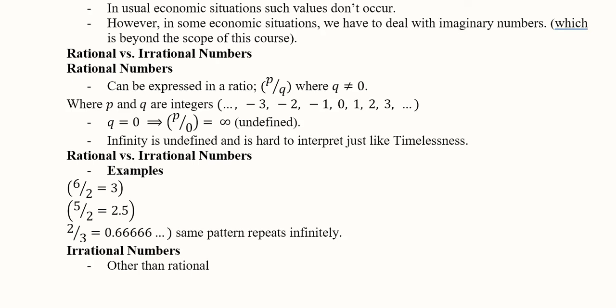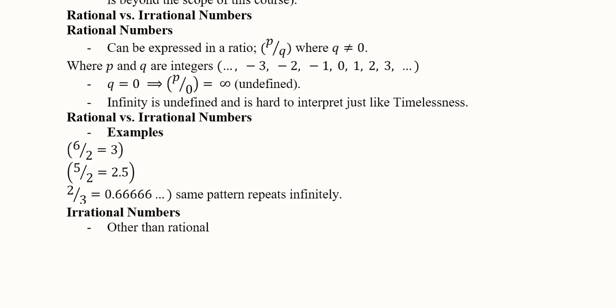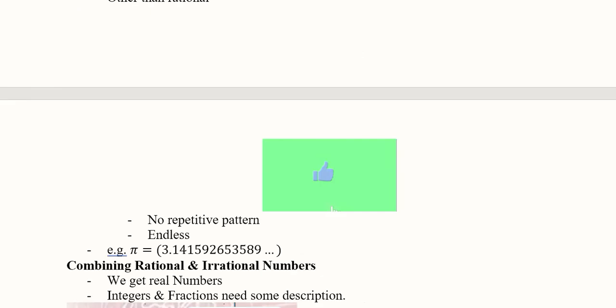When we take the ratio we get a same pattern that gets repeated, like 6 appearing again and again. Then we have irrational numbers that are other than rational, so they won't have the same properties.